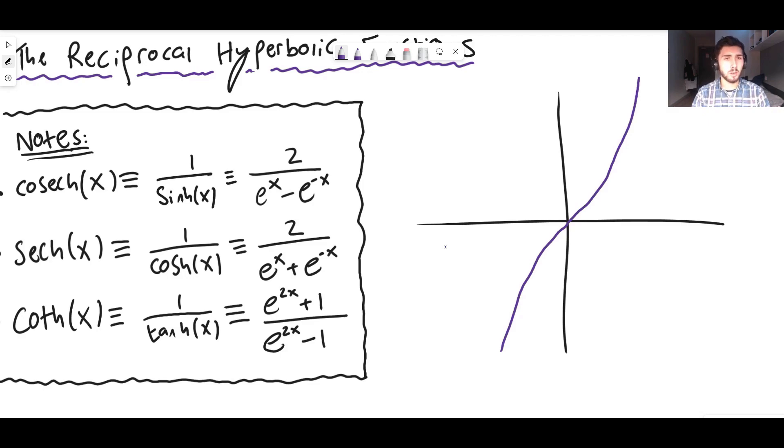So it kind of, and again I'll chuck on the graphs in a second, you can actually see them properly, but it kind of looks like x cubed right. It kind of looks like y equals x cubed. So what would we expect the reciprocal to be?